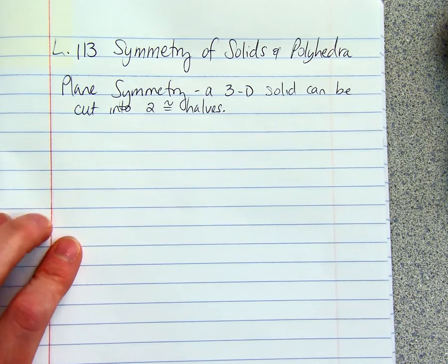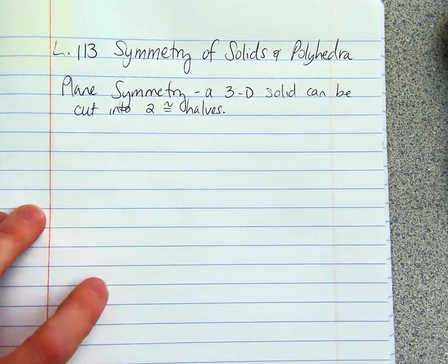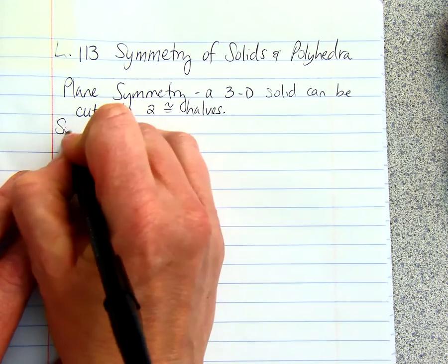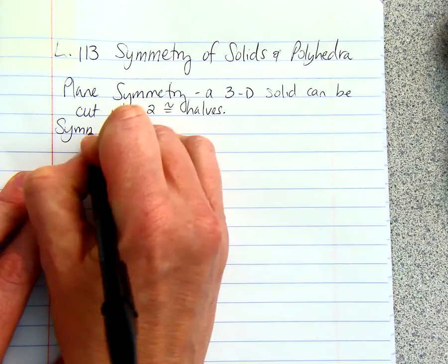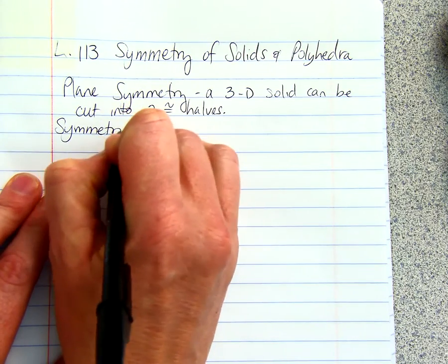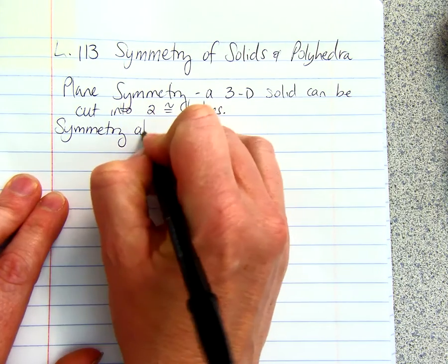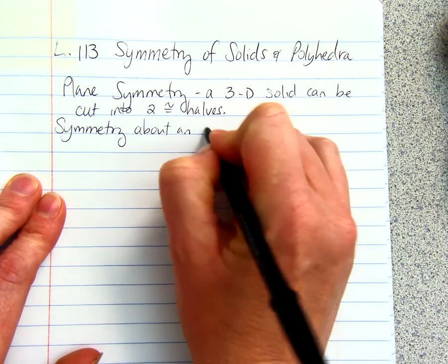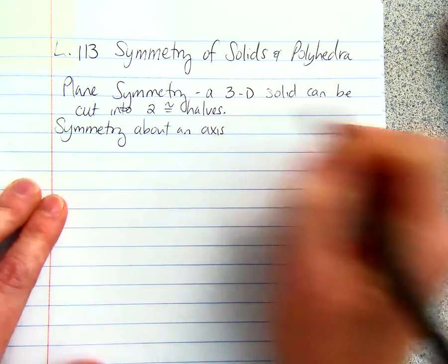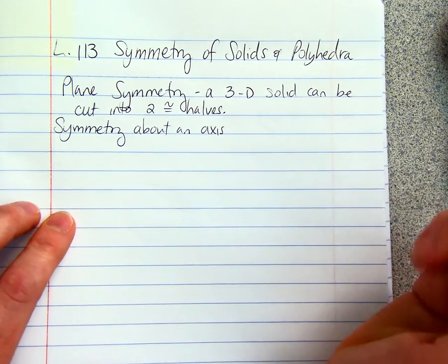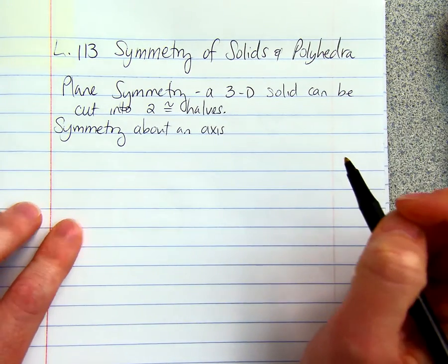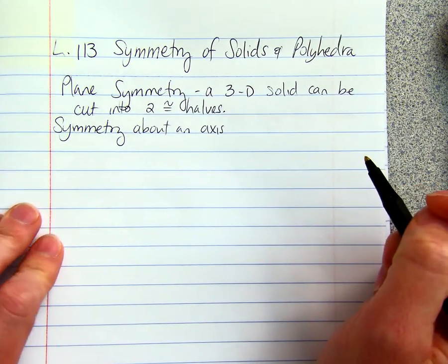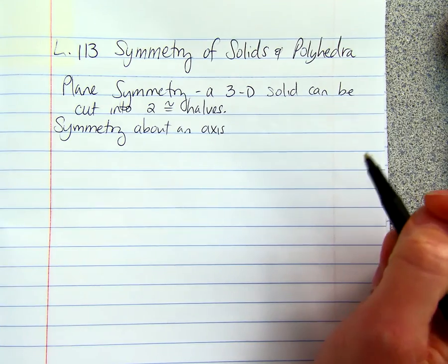And then a solid will have symmetry about an axis, and that's just rotational symmetry for 3D solids.